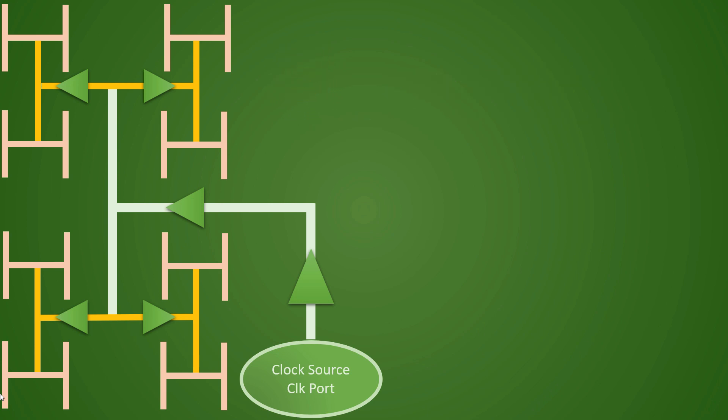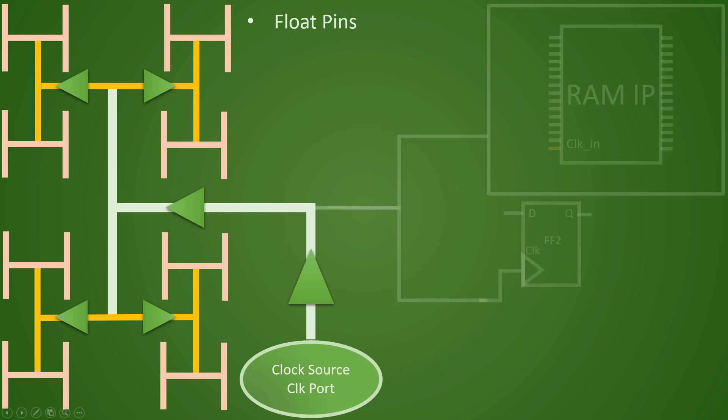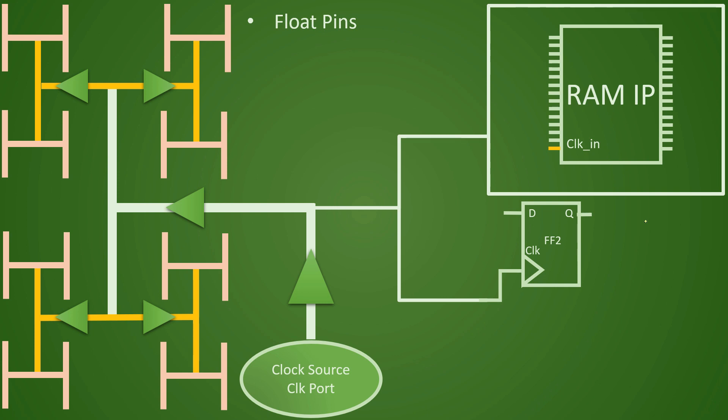There are different exceptions and let us understand them one by one. Let us understand the concept of float pins first. So let us take an example to understand this concept. Let us say that we have a flop and a RAM IP connected like this. And let us say that we have taken the target latency from this clock source to this clock pin.